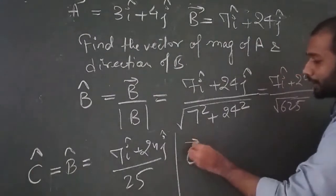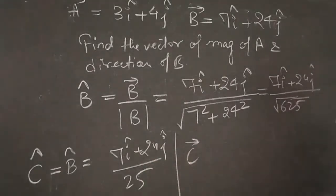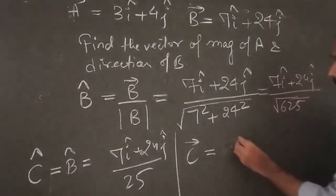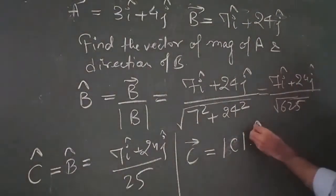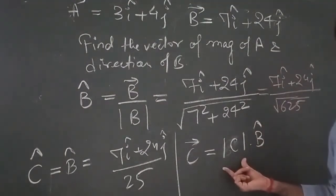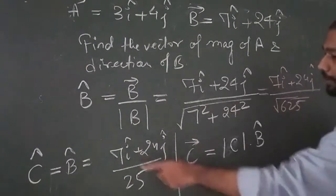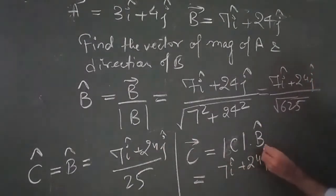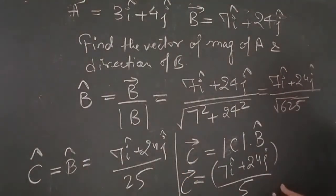To write the complete vector C, we multiply the magnitude of C by the unit vector of B. So vector C = |C| × b̂ = 5 × (7î + 24ĵ)/25. This gives C = (7î + 24ĵ)·5/25 = (7î + 24ĵ)/5. This is the vector we were searching for.